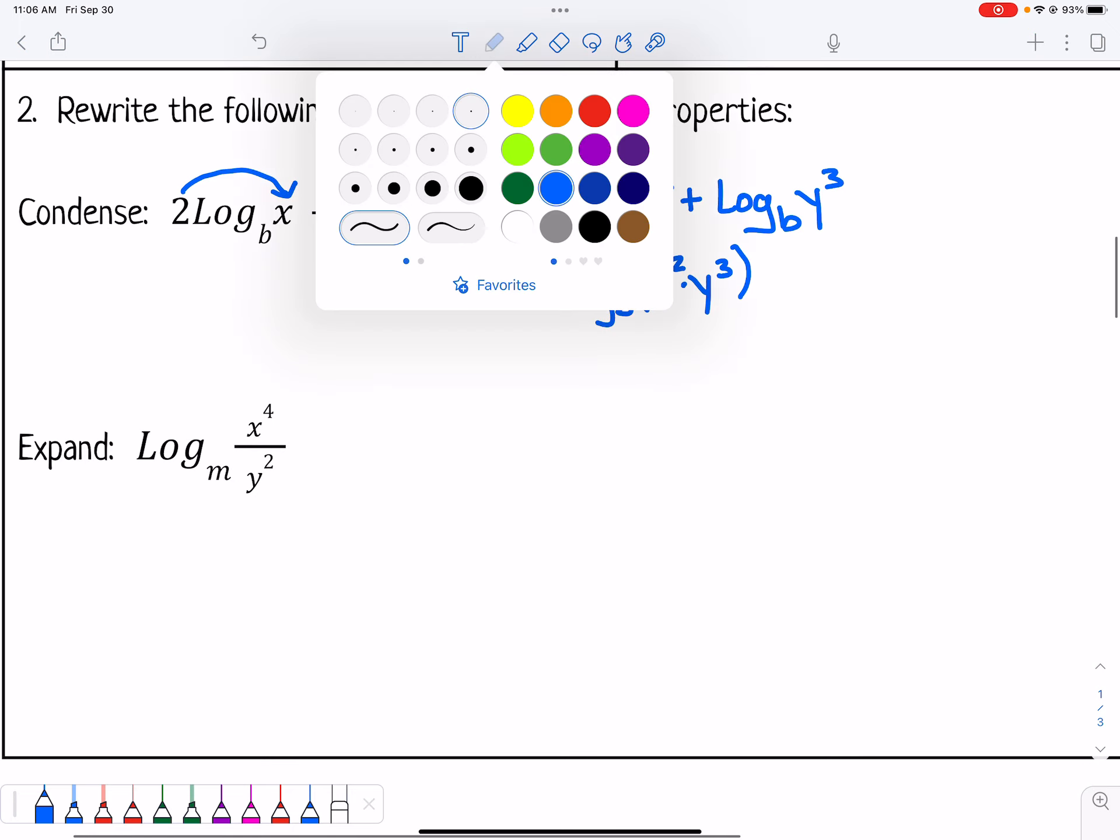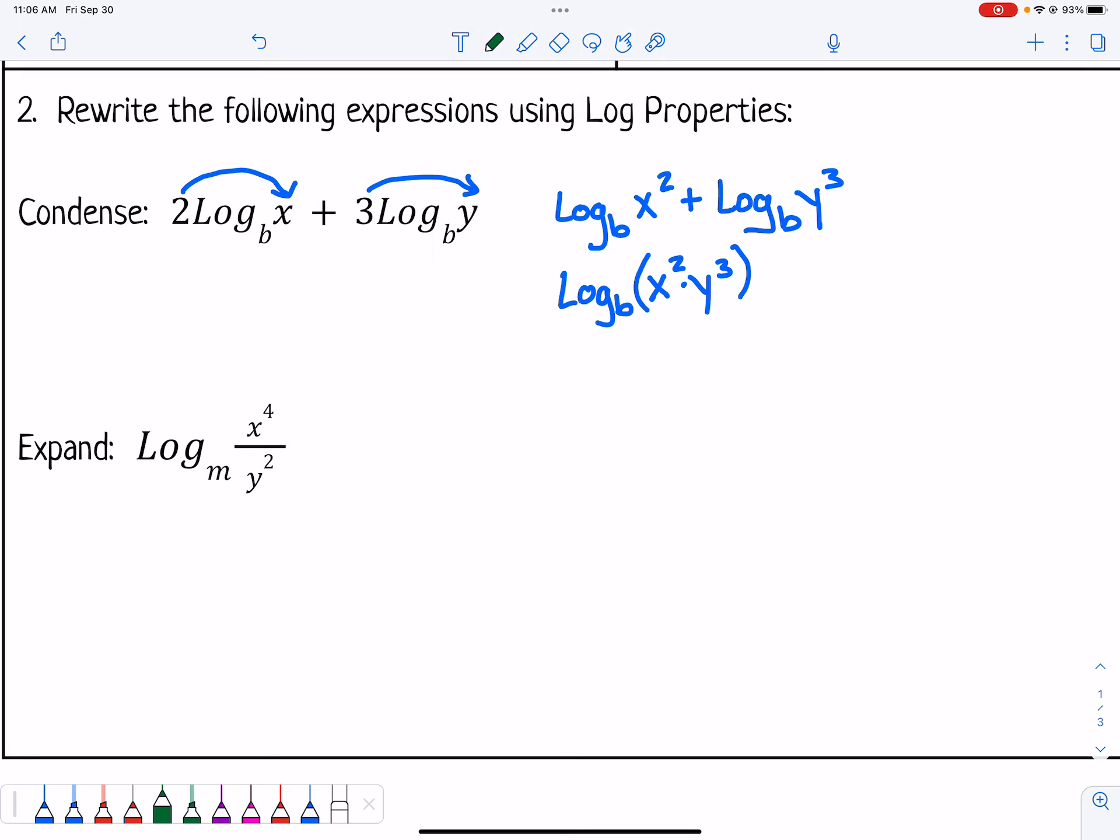In the next part of this question, we want to expand the log expression. This is log base m of x to the 4th over y squared. I want to say log base m of x to the 4th minus log base m of y squared. They each get a log because I'm expanding it, and I'm subtracting because it was dividing. The only other thing I need to do is move the exponents out front so they become coefficients. So I have 4 log base m of x minus 2 log base m of y.